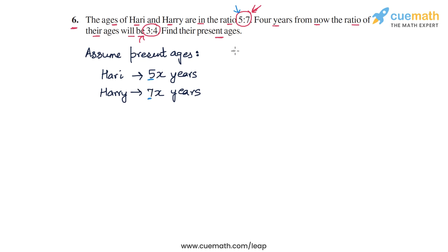Now what will be the ages four years later? So four years later, let's write the expressions for the ages. For Hari, the age four years later will be 5x the present age plus 4. So it will be 5x plus 4 years.